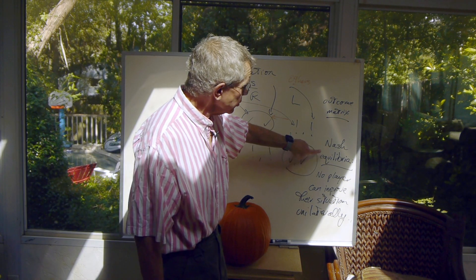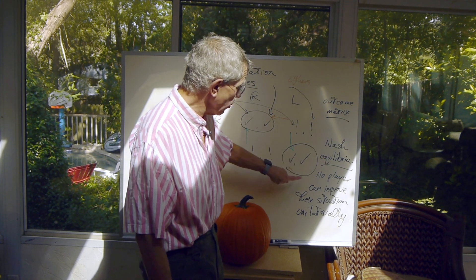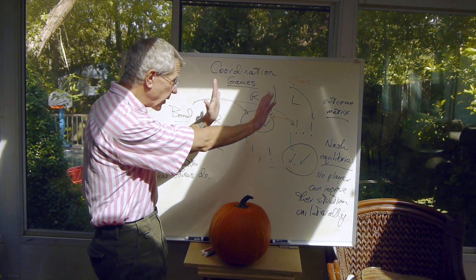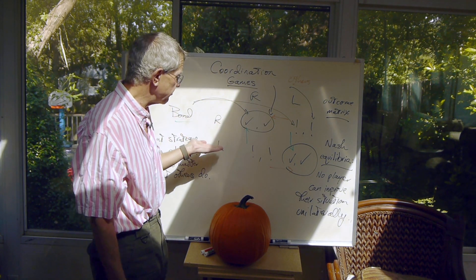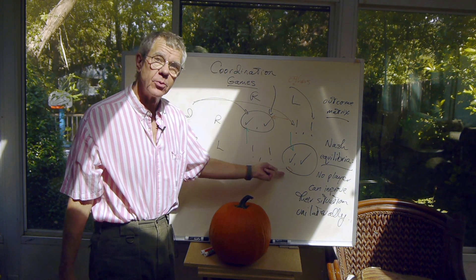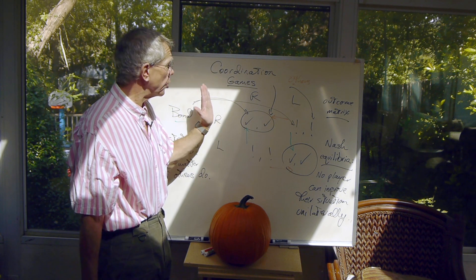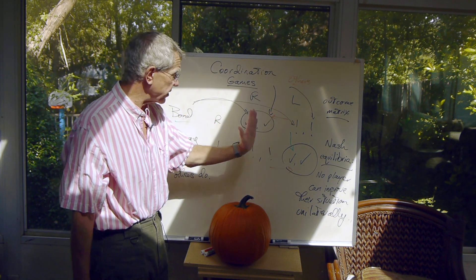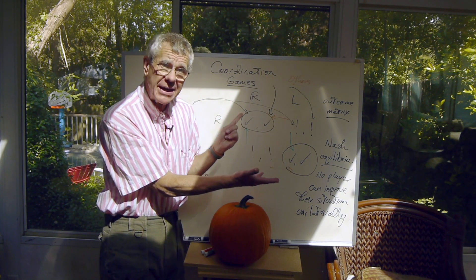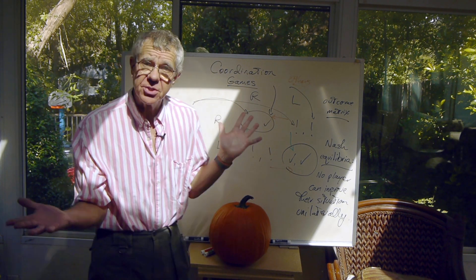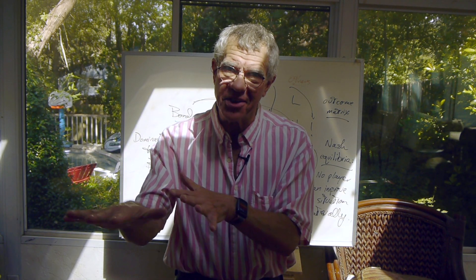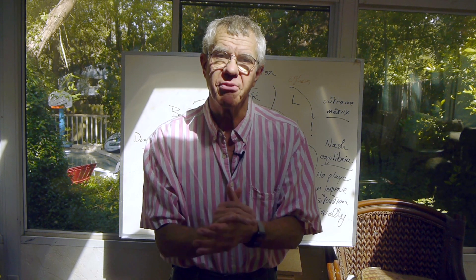But there are two Nash equilibria. In a Nash equilibrium, no player can improve their situation unilaterally, keeping fixed what everybody else is doing and just changing their own behavior. And so here we have one where both are driving on the right. Here we have one where both are driving on the left. In situations like this, where there are multiple Nash equilibria, we look at them and sometimes one is clearly better than the other. In this game, they're not. They're both cases where there are no accidents. There's nothing intrinsically better about driving on the right as opposed to driving on the left. They both work fine.